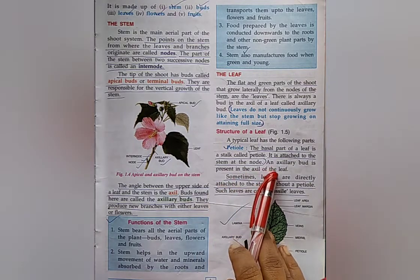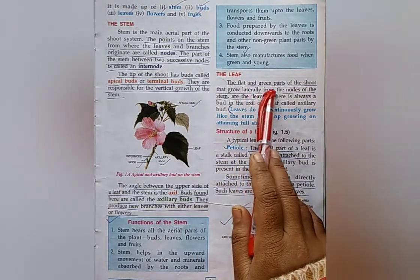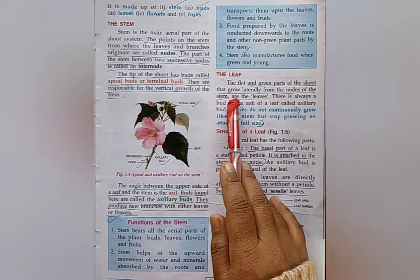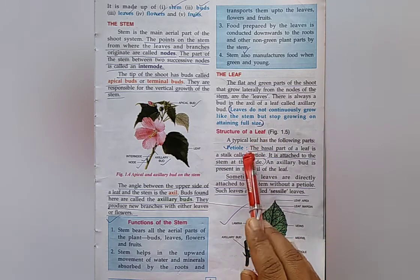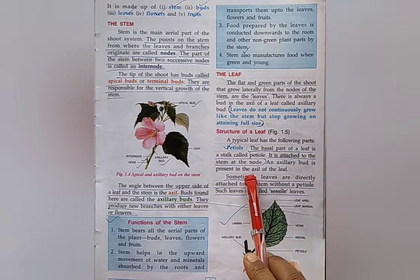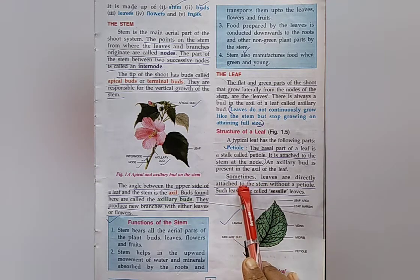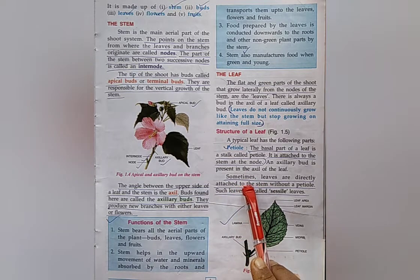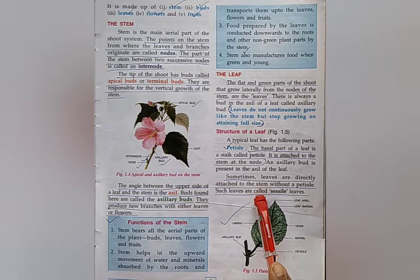The leaf. What is leaf? The flat and green parts of the shoot that grow laterally from the nodes of the stem are the leaves. Write the name of the main parts of a leaf: Petiole, leaf blade or lamina, midrib. What is petiole? The basal part of a leaf is a stalk called petiole. Next is sessile leaves. Which leaves are called sessile leaves? The leaves which are directly attached to the stem without a petiole are called sessile leaves.